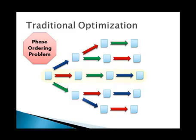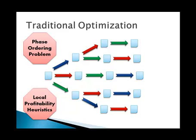There is, in fact, another problem with traditional optimization. Profitability heuristics are limited to being local. Each optimization has two jobs: first, they must figure out if the transformation could be applied; second, they must decide whether this transformation would actually improve the program. For this, it uses a profitability heuristic. Unfortunately, in traditional optimization, these profitability heuristics are limited to being local — local in the sense that they cannot take into account the effect of future optimizations.